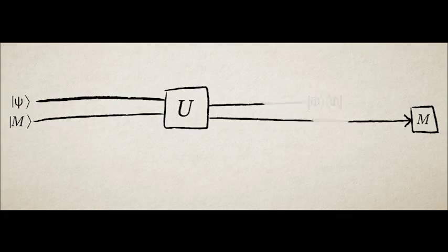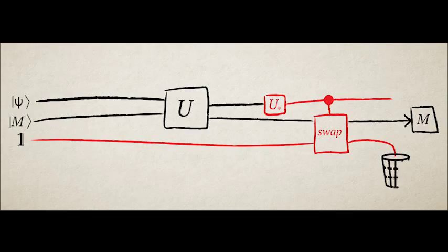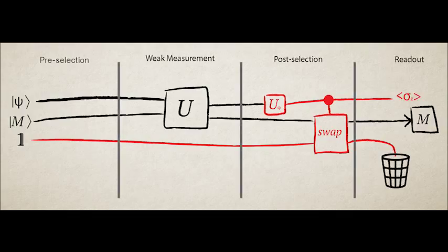To implement this on an ensemble system, we use the following trick. First, we add an ancilla system in a maximally mixed state. Our post-selection is done by selectively swapping the system we want to keep with this ancilla. The swap corresponds to a failed post-selection.